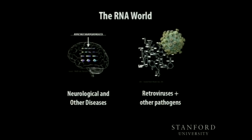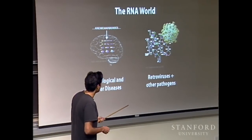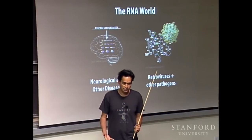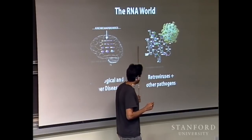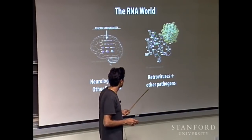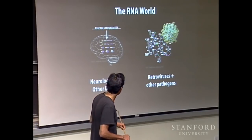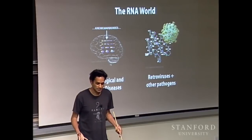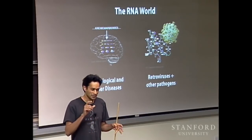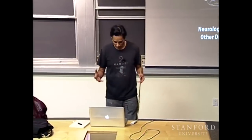Defects in how RNAs fold up and cut and paste themselves have been traced to a huge number of diseases — one example is childhood spinal muscular atrophy, another is Parkinson's. All retroviruses, including HIV, SARS, and polio, have genomes made entirely of RNA. Critical components of this genome fold up into intricate structures necessary for viral infection and replication. So one idea is: what if we could cure a brain disease or defeat a virus by manipulating these RNA components? What if we could create an RNA device that disrupts their folds?